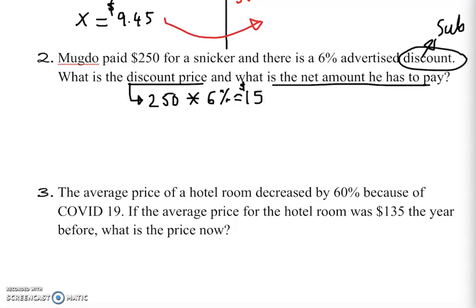The key to remember: discount is subtraction, sales tax is addition, and commission is also addition at the end. So to find the net payment, you do $250 minus $15, which gives you $235.